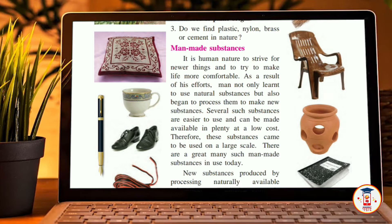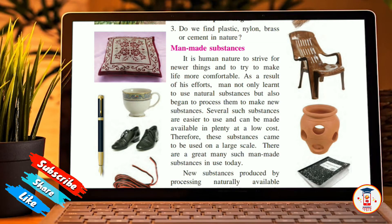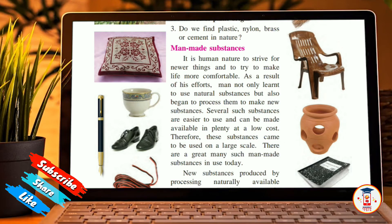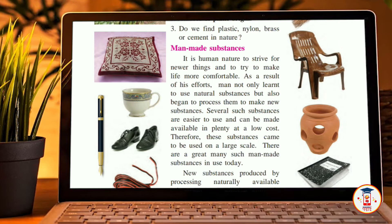Humans transformed natural substances and created new substances. Man-made substances were available at a lower cost compared to natural substances, which is why people started to shift to man-made substances. Natural substances used to cost more, while man-made substances were much cheaper to produce.